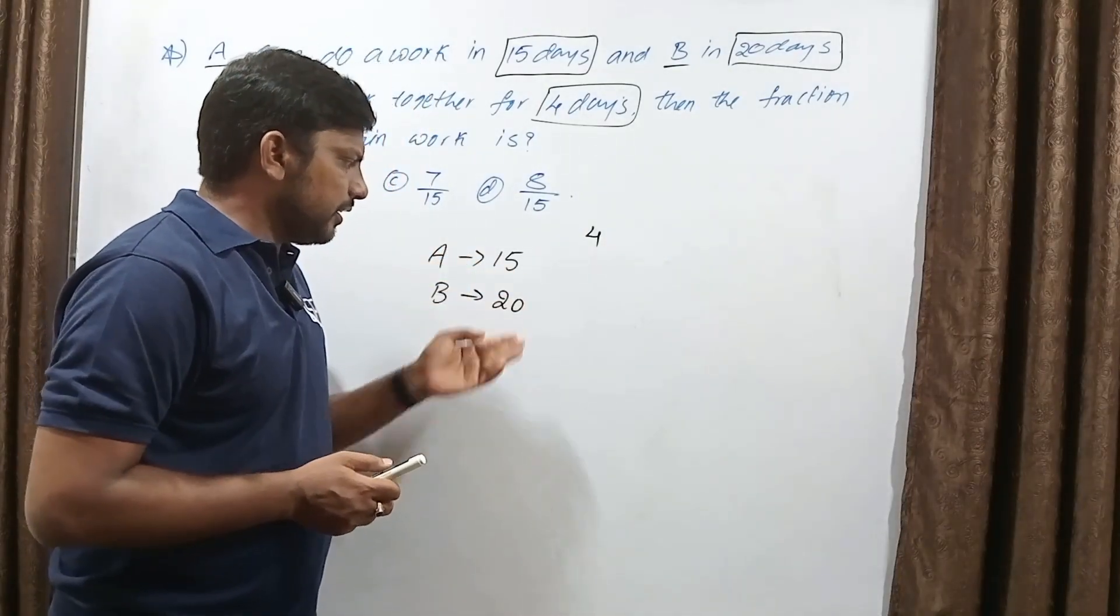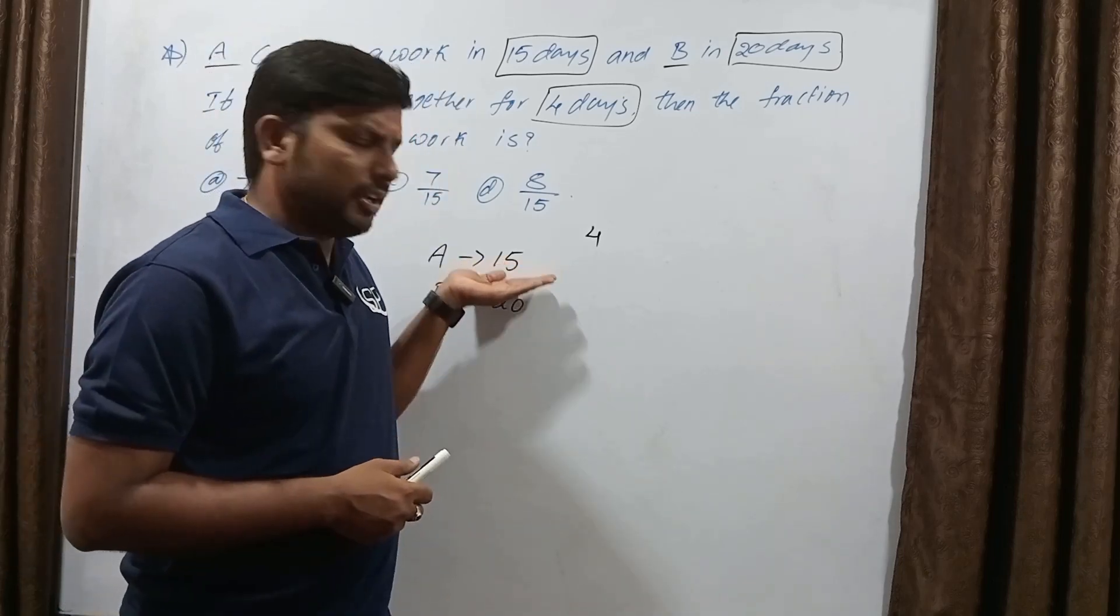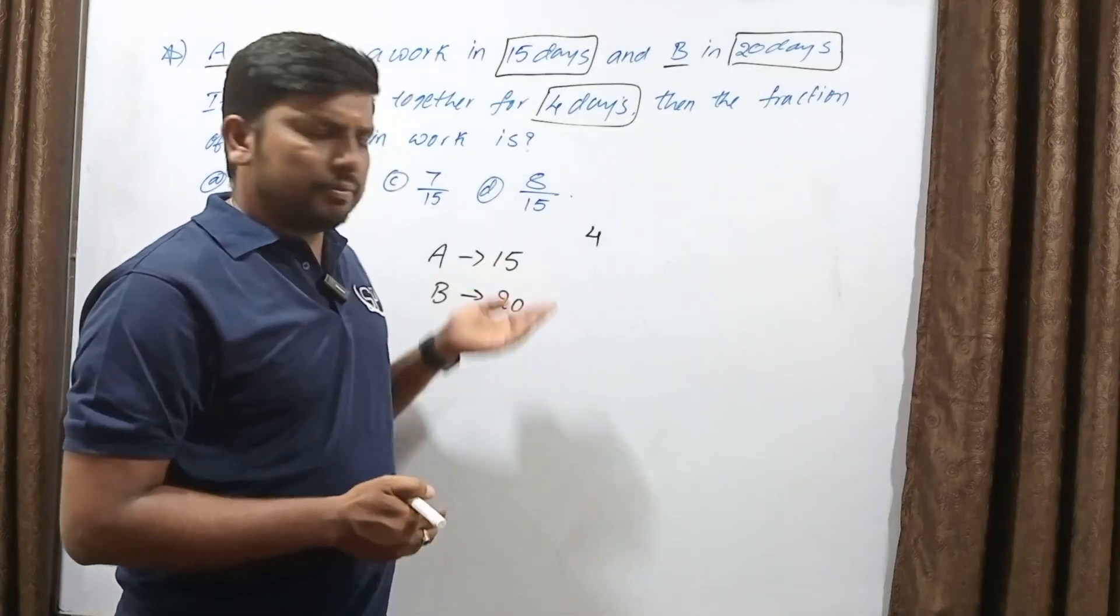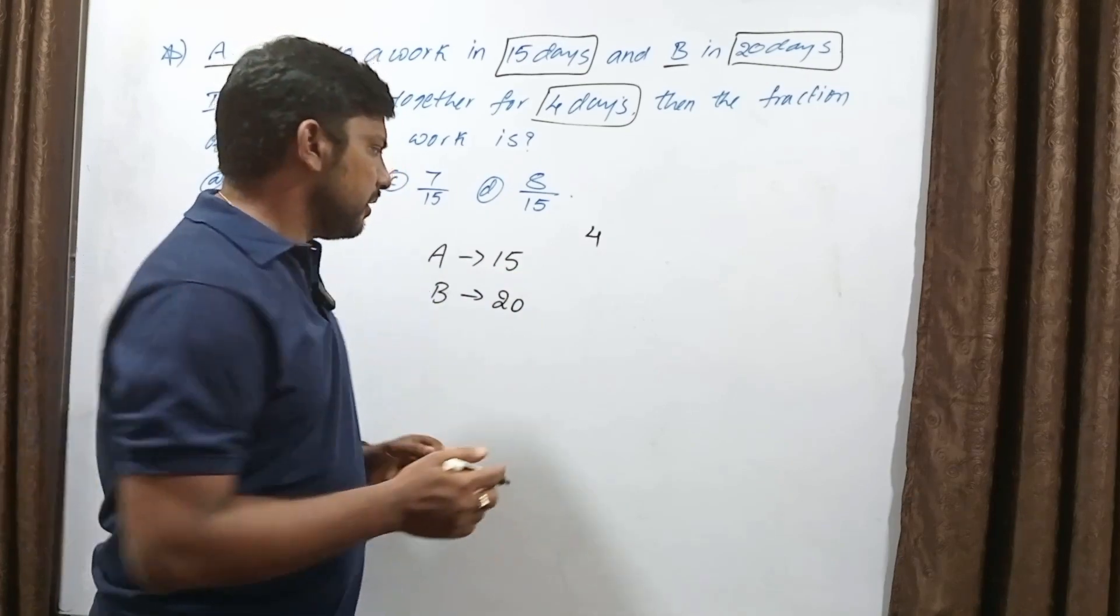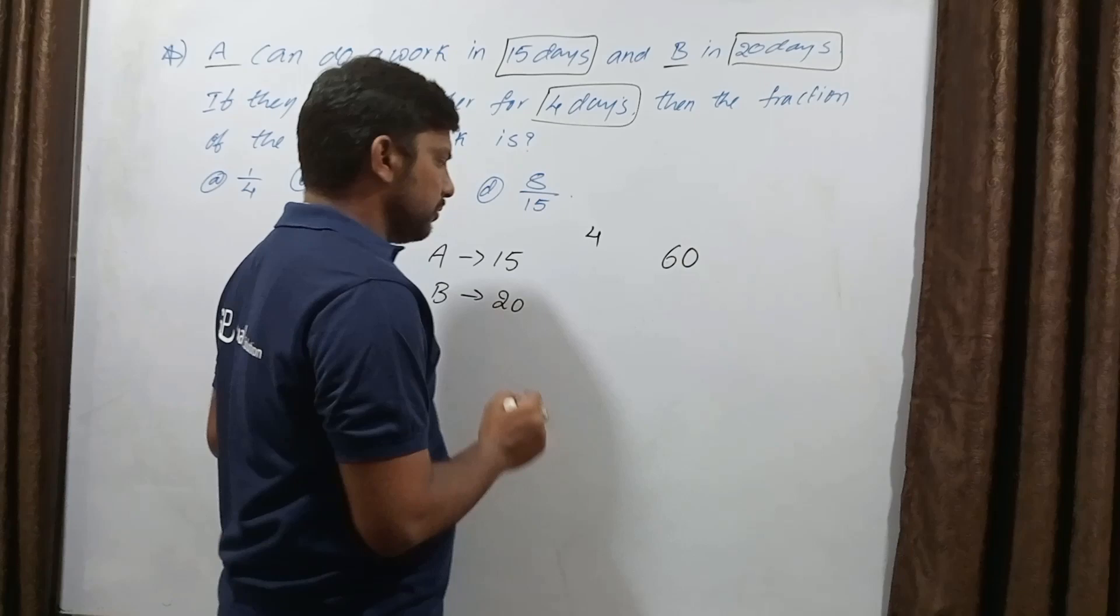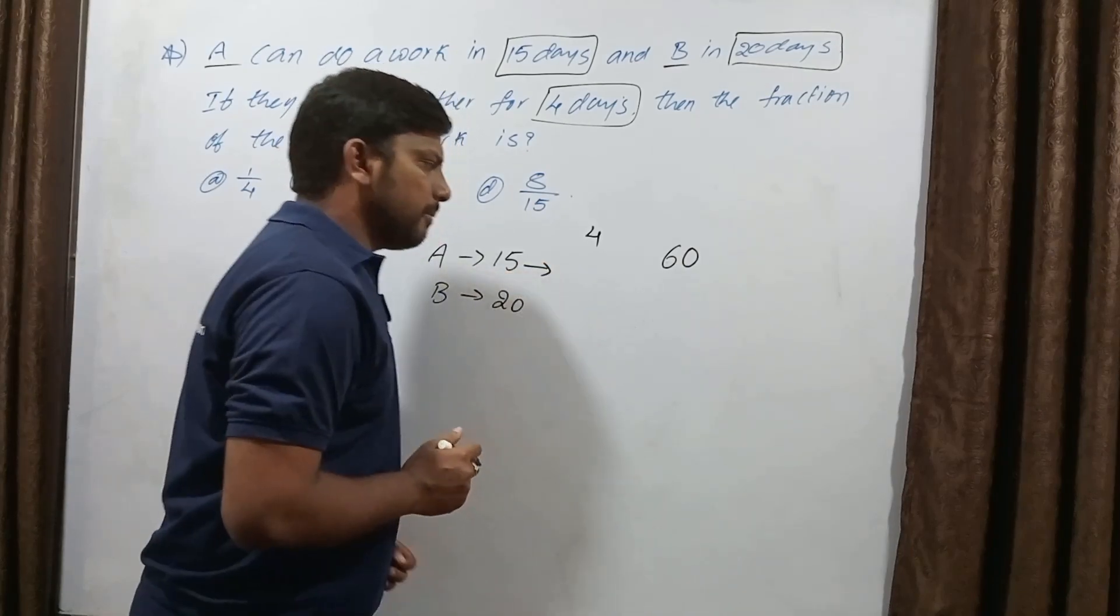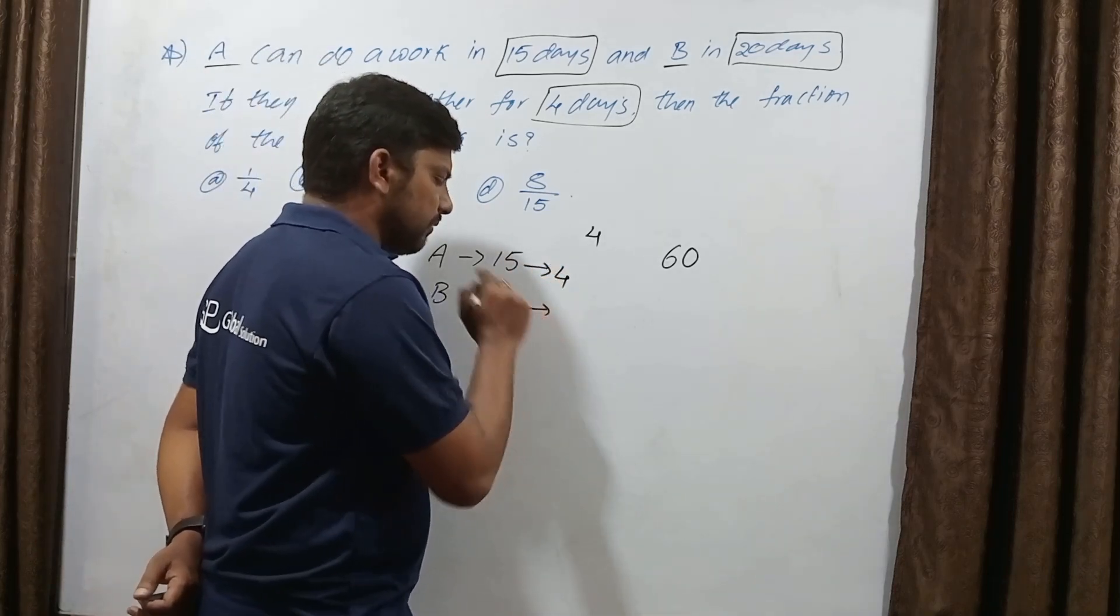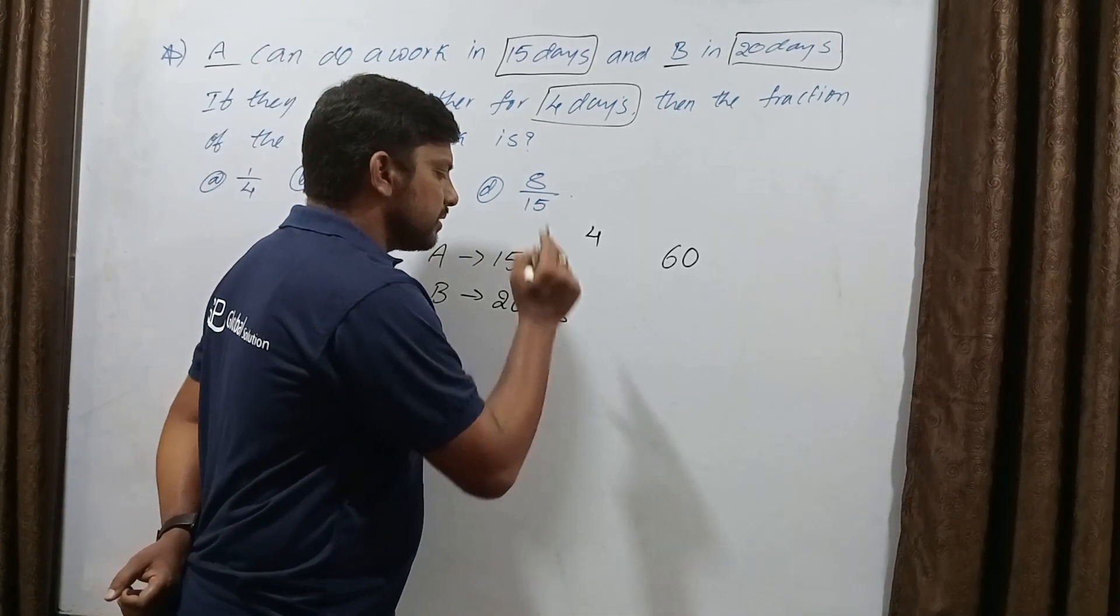A can do the work in 15 days. If we try to find out, 15 and 20 - we need the LCM. 15 and 20, an example of the multiple number is 60. If it turns to 20 and 20, A can do the work in 15 days.